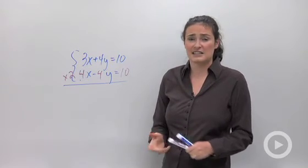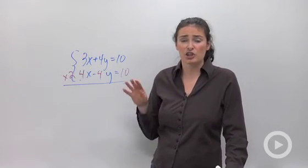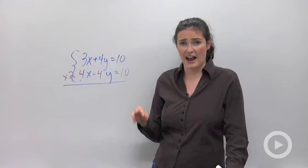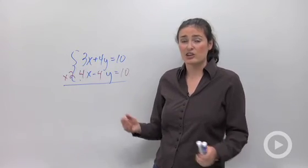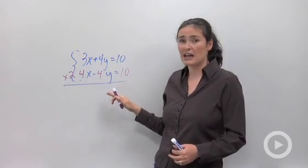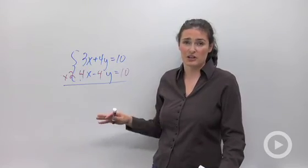So I'm going to leave you guys with the idea that to use elimination, you're looking for coefficients that are additive inverses. And then using those, you can add your equations vertically to have one letter in one equation.